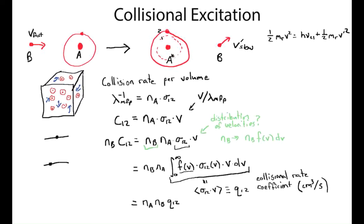For a two-level atom, the excitation rate per atom is N_B times Q_12. Similarly, collisional de-excitation is the reverse process: a slow-moving B particle collides with excited atom A*, transferring energy into kinetic energy of B, returning A to its ground state. The rate of that transition per atom is N_B times Q_21, a weighted average over the velocities of sigma_21(v) times v. Note the velocities involved in de-excitation are generally slower than those causing excitation.